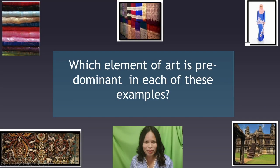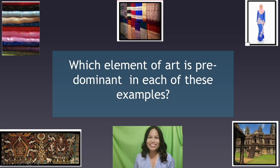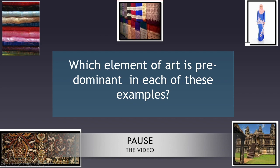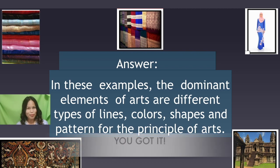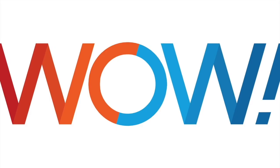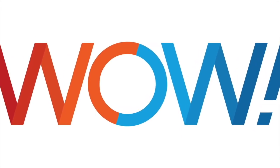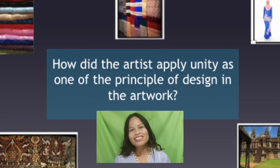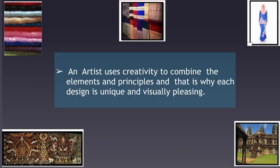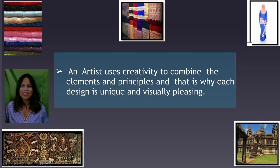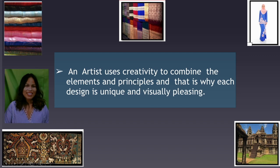Very good, students. Another question: which element of art is predominant in each of these examples? In these examples, the dominant elements of art are different types of lines, colors, shapes, and patterns for the principle of art. How did the artist apply unity as one of the principles of design in the artwork? The answer is: an artist uses creativity to combine the elements and principles of art, and that is why each design is unique and visually pleasing.